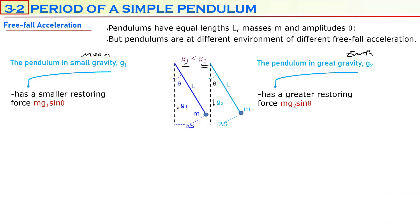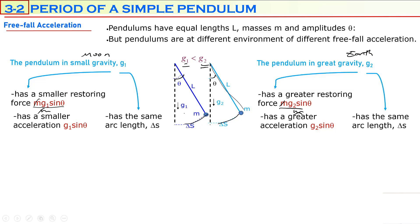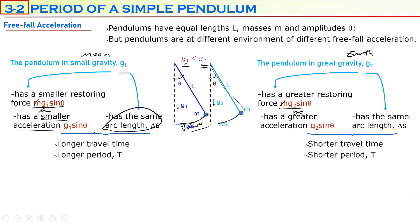Dividing forces by mass, the masses simplify, so the accelerations will be different: the pendulum on the moon has a smaller acceleration, g1 sine theta, while the pendulum on Earth has a greater acceleration, g2 sine theta. Arc lengths are equal because amplitudes and lengths are the same. The pendulum on the moon has the same arc length but smaller acceleration, meaning it is slower. A slower pendulum means a longer travel time and therefore a longer period in an environment of smaller gravity.